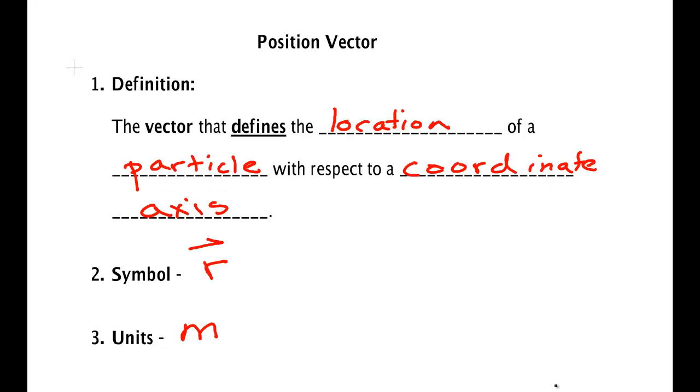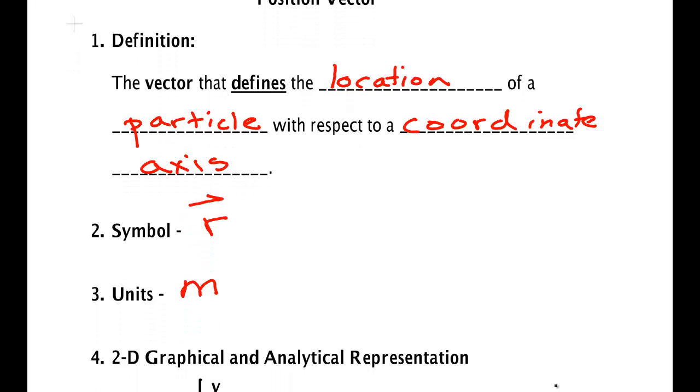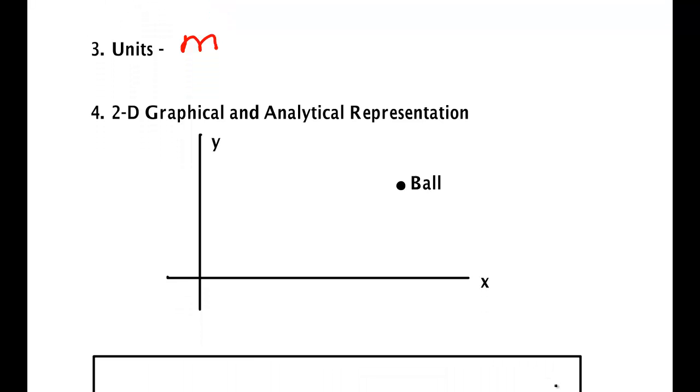Now it is useful to be able to draw a position vector. Here I have a ball and I'm going to start with the coordinate axis. There's my X, there's my Y. If you start at the origin and draw a vector straight to the ball, then that defines the position and is the position vector for that ball.